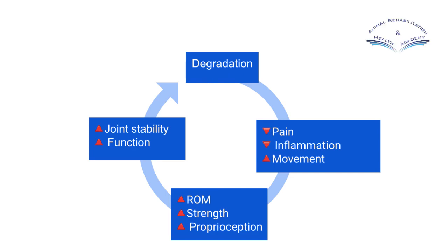So what we want to do is flip these the other way. We want to see a reduction in pain, a reduction in chronic inflammation, more movement, more range of movement, more strength, and better proprioception — which will lead to better joint stability and better function. If we introduce PMF, we're thinking about using it as part of a multimodal approach to the treatment of osteoarthritis for rehabilitation. I would not use PMF, or any electrical physical agent, just on its own — we're looking at a multimodal approach.